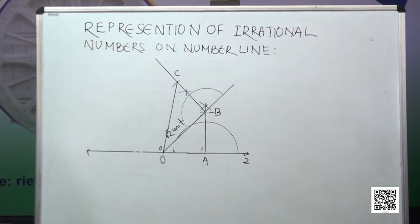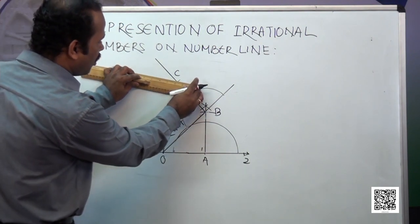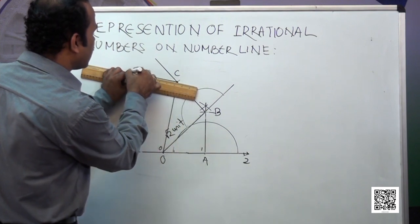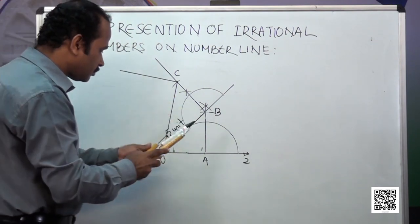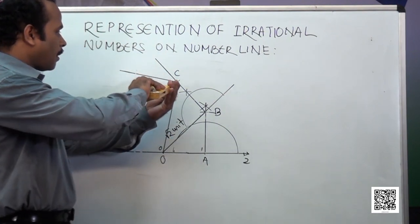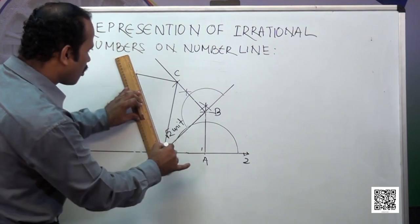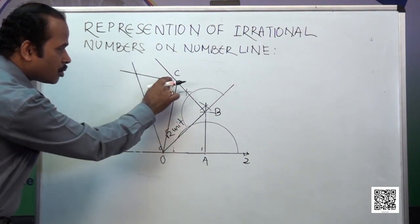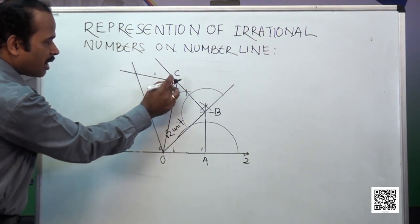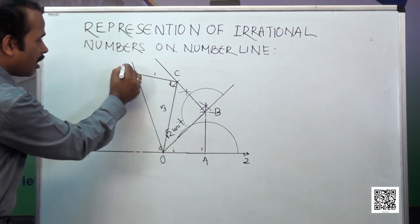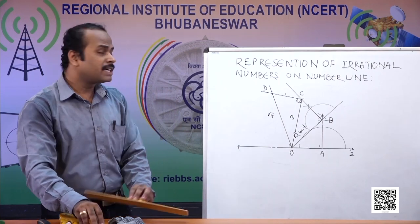If I keep going with the same process, at every point I construct a perpendicular, extend the line, and in the same manner if I draw further, I find a right angle again. Taking 1 unit there with the same process, if I join the next point, this length becomes root 4. So root 3 squared plus 1 squared gives root 4, which equals 2 — a rational number, but presented here through the root 4 form.